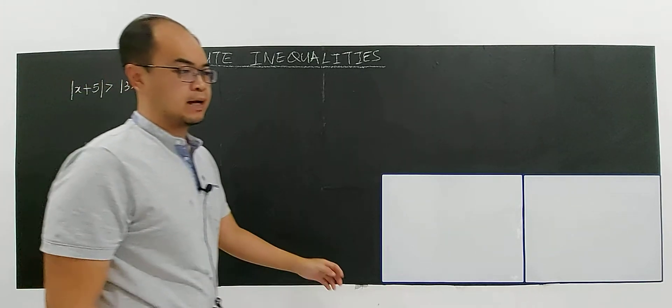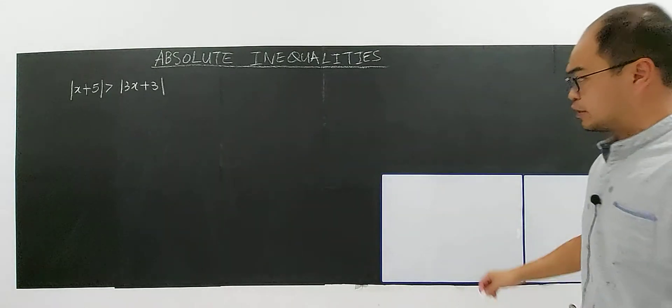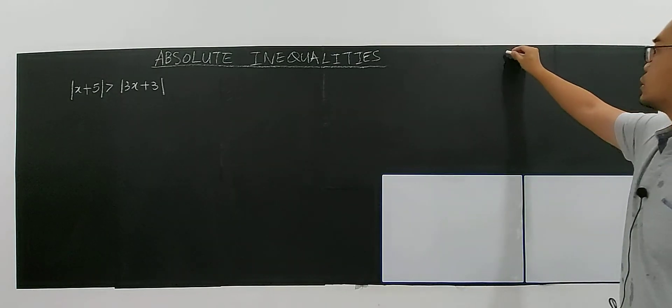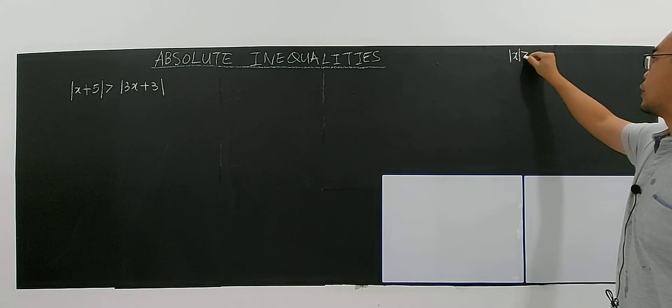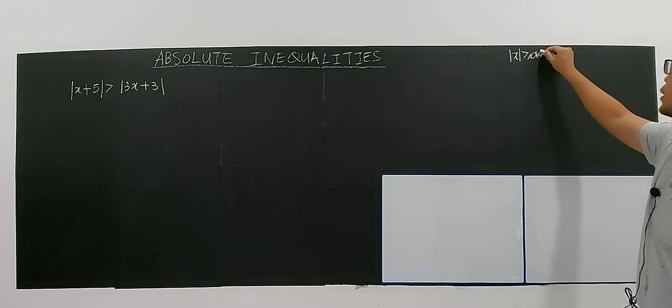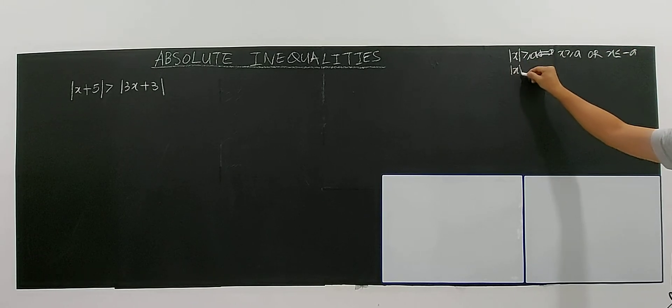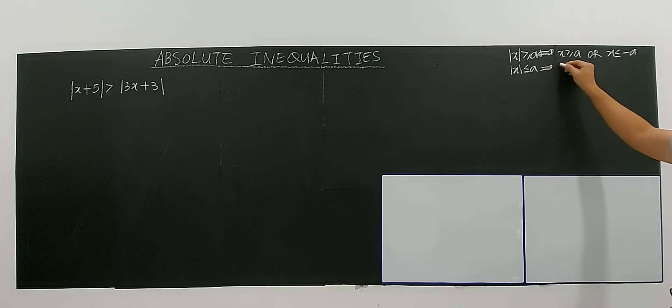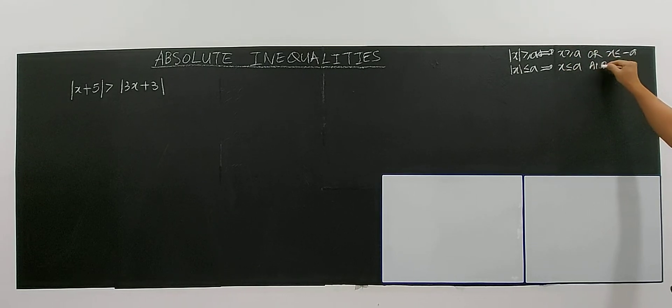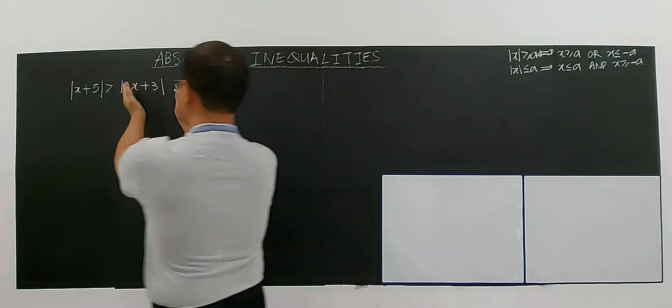So for this case, you can't apply the formula for basic definition. Basic definition, you have modulus of x greater equal a. So you have x greater than a or x less than negative a. If you have less than a, then you just reverse everything. This one become and, this one become greater than. This formula can't apply for this case. You have to remember when you see there are two modulus both sides.